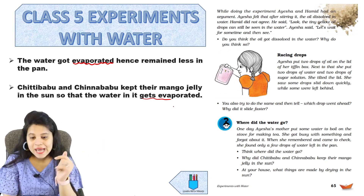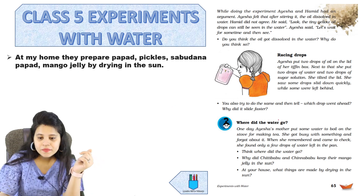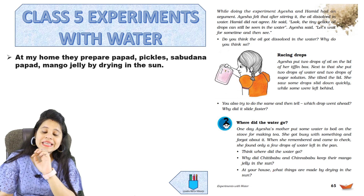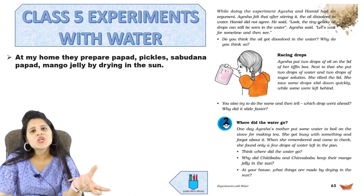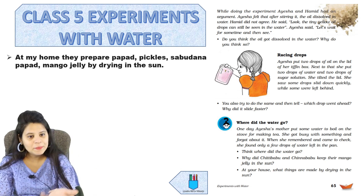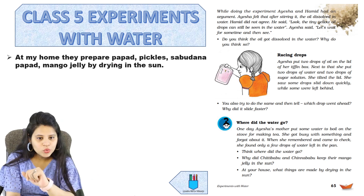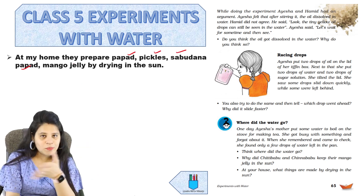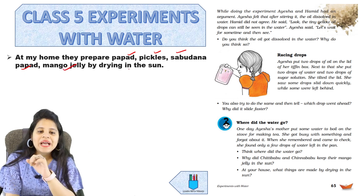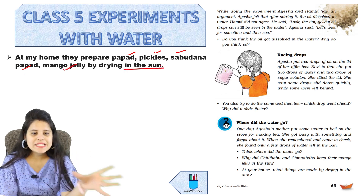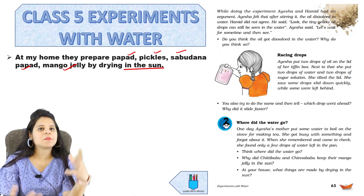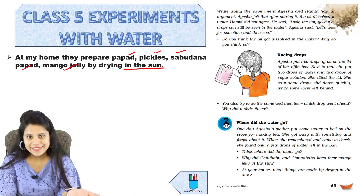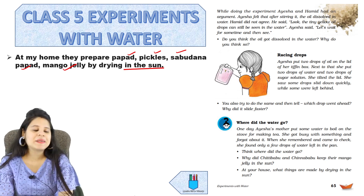At your house, what things are made by drying in the sun? At my home, they prepare papad, pickles, sabudana, and mango jelly by drying in the sun. This was our page number 65.